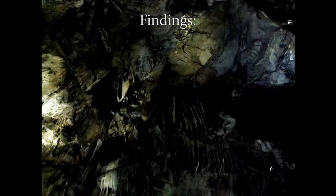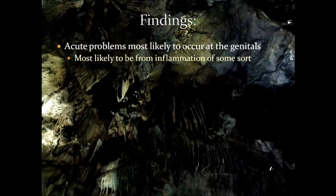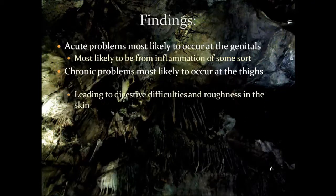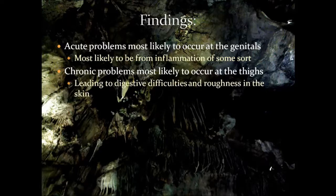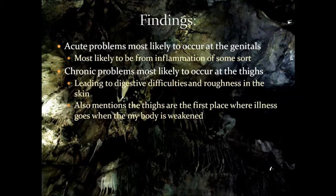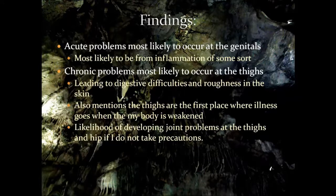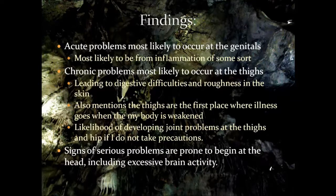So here are the actual findings from my own chart. For acute problems: most likely to occur at the genitals, most likely from inflammation of some sort — we can even tell whether it will be an inflammatory process or a form of fluid blockage. For chronic problems: most likely to occur at the thighs. Specifically, there's a connection with the stomach which leads to digestive problems and causes roughness in the skin on the thighs. The thighs are the first place where illness goes when my body is weak, and I could develop joint problems at the thighs and hips if I don't take precautions — meaning if I don't exercise and take care of myself.